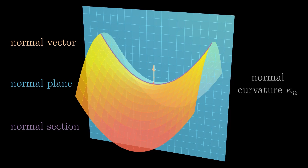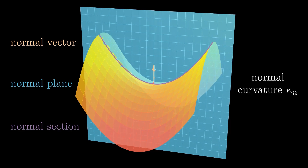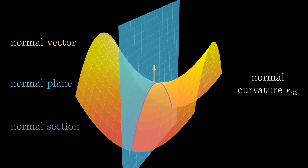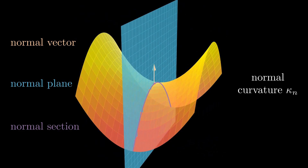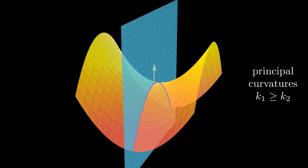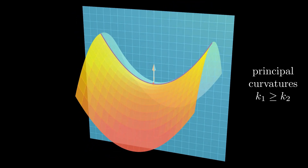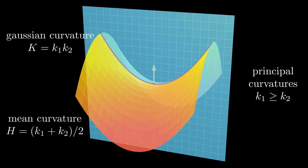The sign of the normal curvature is determined by the direction of the chosen normal vector. For example, here the normal curvature is positive and here it's negative. The largest and smallest possible normal curvatures are called principal curvatures. Here this normal section has the lowest possible normal curvature and this one the highest. Their product is the Gaussian curvature and their average the mean curvature.